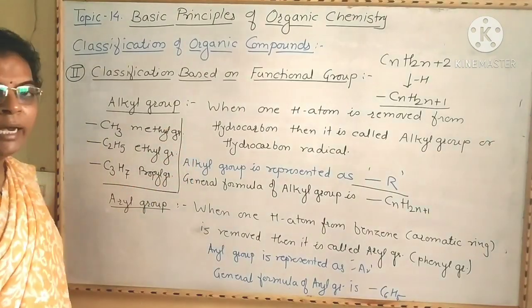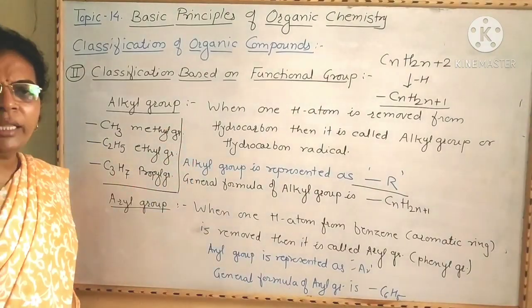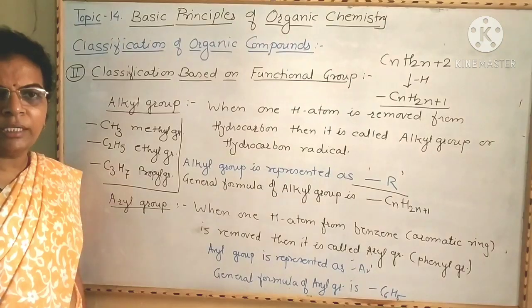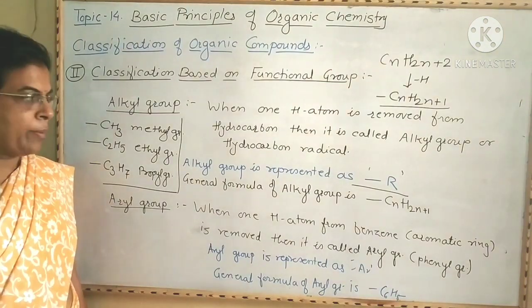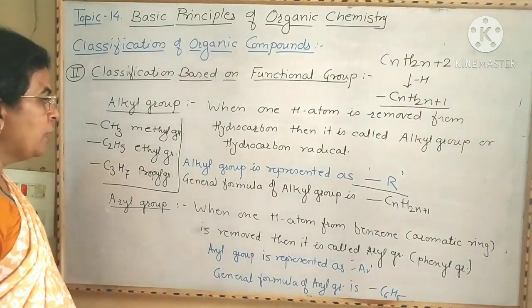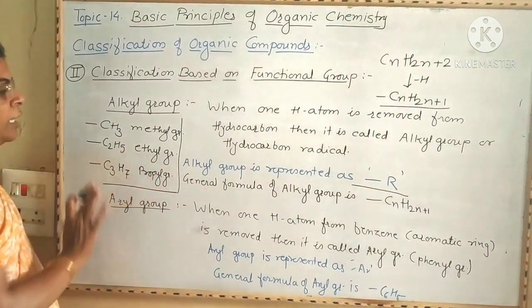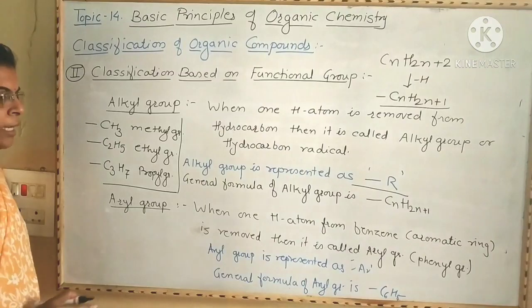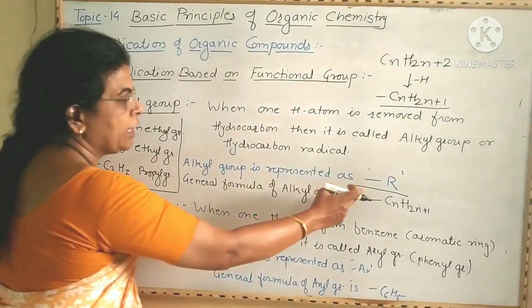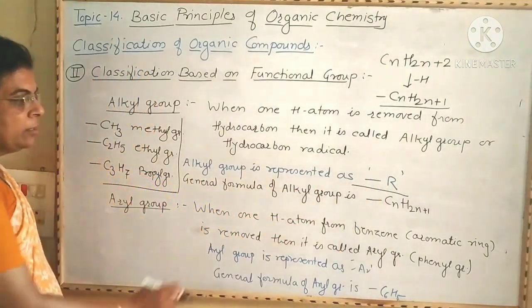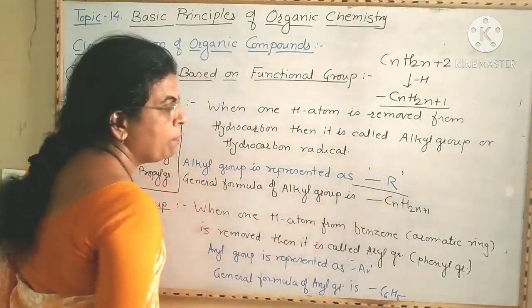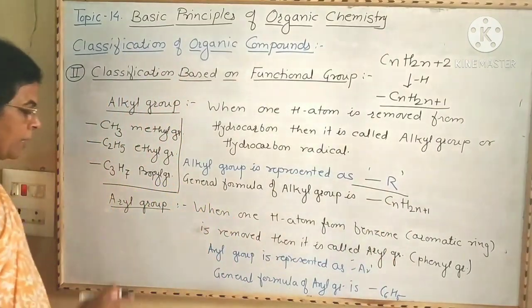You can write all the examples of alkyl groups up to 10 carbon atoms. These alkyl groups are represented as -R, and the general formula is CnH2n+1.